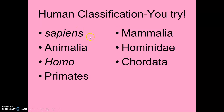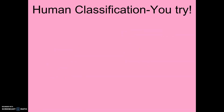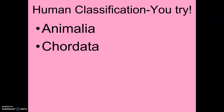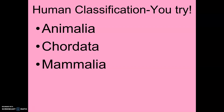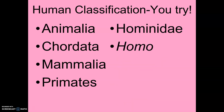You try — start with the kingdom and work your way down to the species. This is a human. Kingdom: Animalia. Phylum: Chordata — remember, that's backbone. Class: Mammalia — we're mammals. Order: Primates. Family: Hominidae. Genus: Homo. Species: Sapiens.